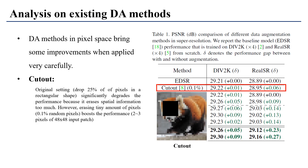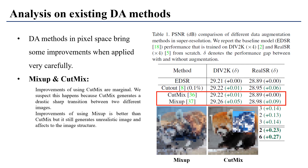For example, Cutout originally drops 25% of pixels in a rectangular shape, which seriously degrades the image restoration performance. However, if we change the ratio from 25% to 0.1%, Cutout gives a slight enhancement. CutMix and MixUp, which mix the pixel distributions of two images, can also provide improvements.